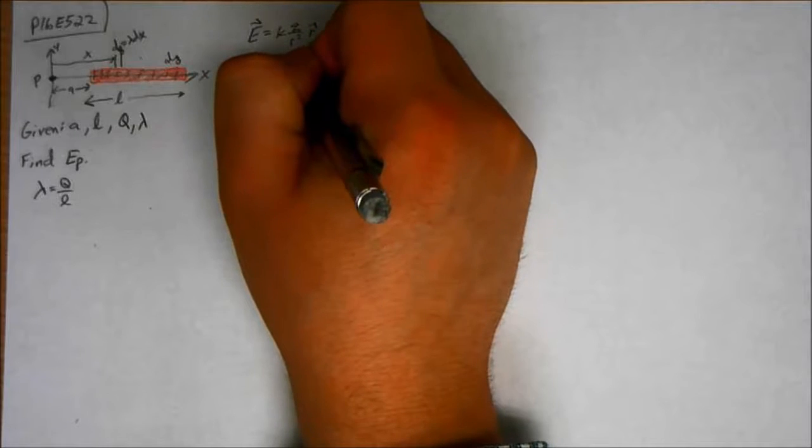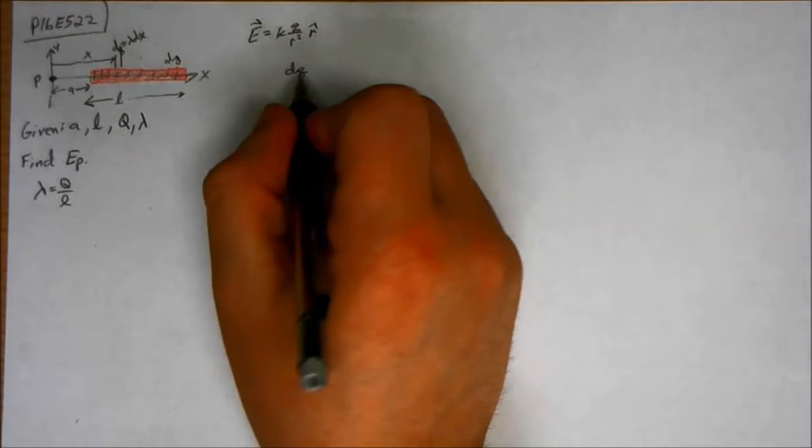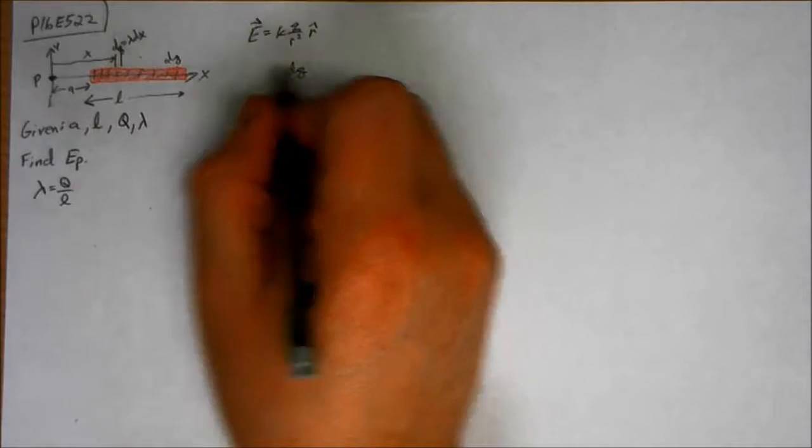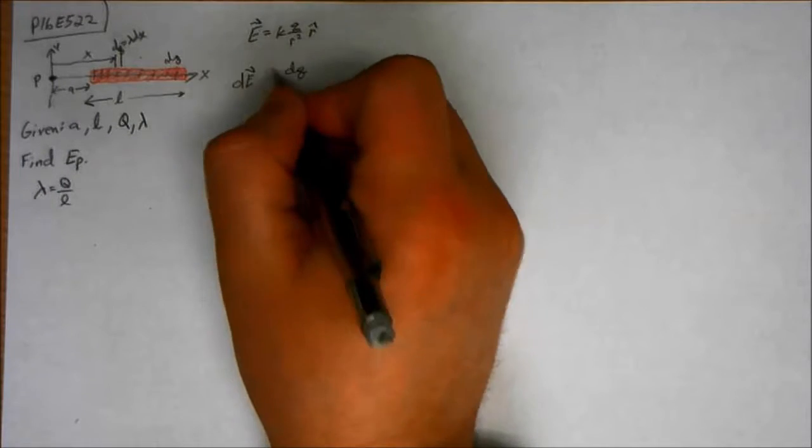So in other words, DQ, which is a differential portion of the charge, just a tiny portion of this charge, creates a tiny portion of the electric field.